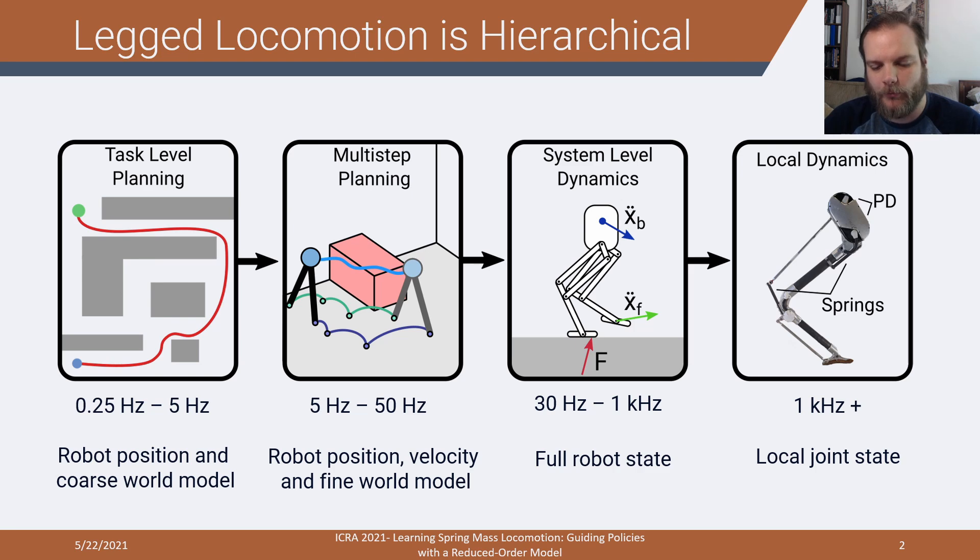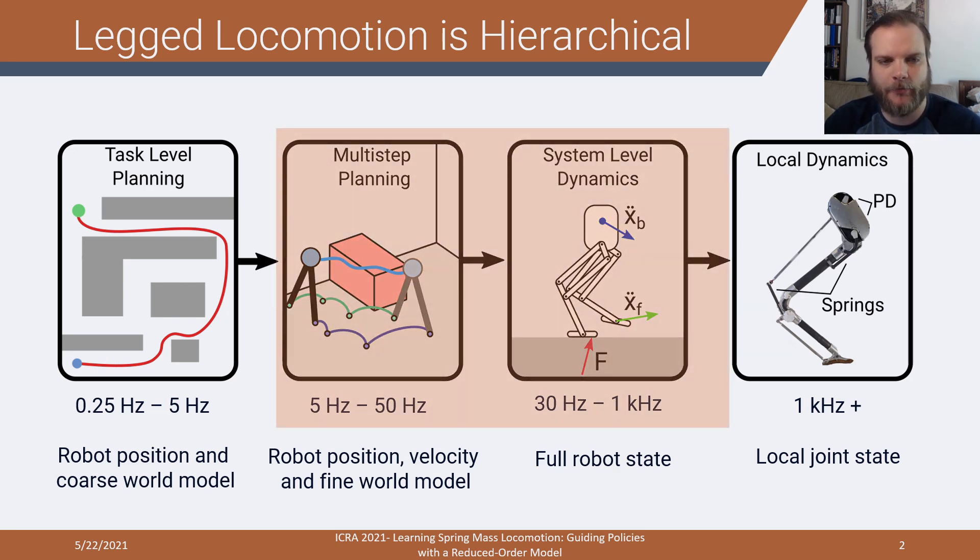In this work, we're really going to be focusing on how we can incorporate RL into this, into the full structure of it. RL reinforcement learning has been really good at controlling the system-level dynamics on down, but incorporating some sort of online planner and reduced order model planners is a more difficult problem. So we're going to look really at the interaction between a reduced-order multi-step planner and system-level dynamics through a learned policy.